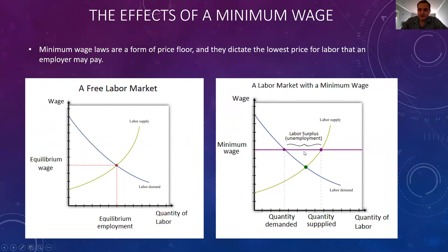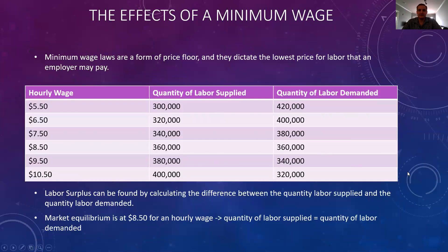This labor surplus can be found by calculating the difference between quantity supplied and quantity demanded. I actually have a table here we can look at in a little bit of a different way. On the left I have hourly wage, in the middle column I have quantity of labor supplied, and on the right I have quantity of labor demanded.